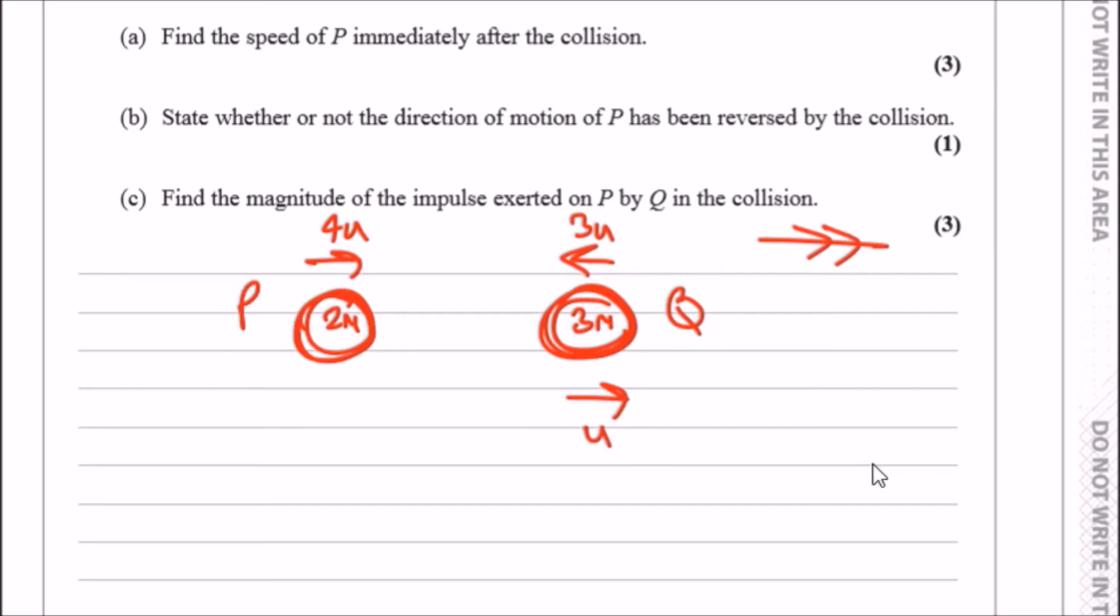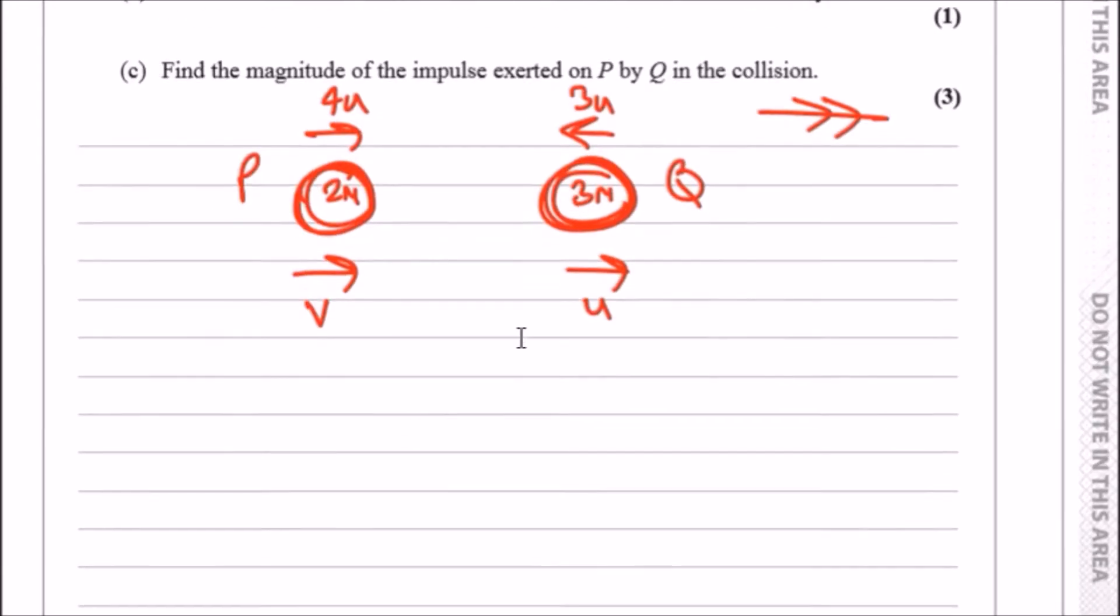I'm going to make the direction of motion here, so this is our direction of motion. Let's just call it v. Now the way I would resolve this is I would use the fact that the sum of the total momentum must equal zero.